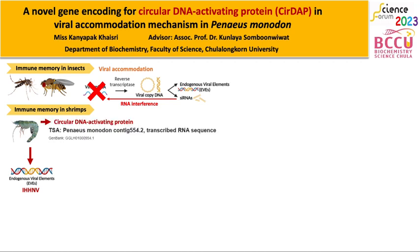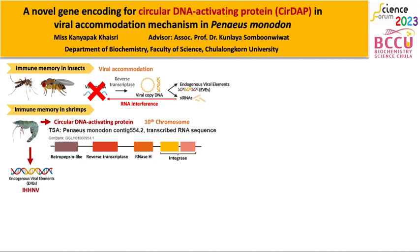Moreover, in this study, a novel gene that might be involved in viral accommodation was identified and characterized in Penaeus monodon, named Circular DNA Activating Protein or CIDAP encoding gene. Sequence analysis shows that the CIDAP encoding gene is located on chromosome number 10, and CIDAP contains three important domains: reverse transcriptase, INSH, and integrase.